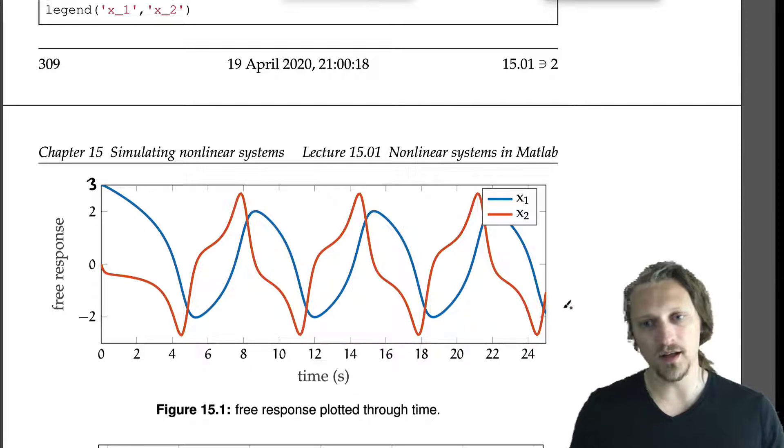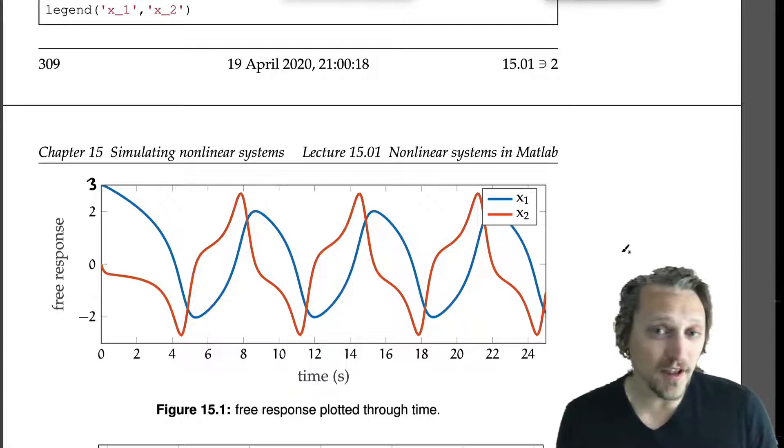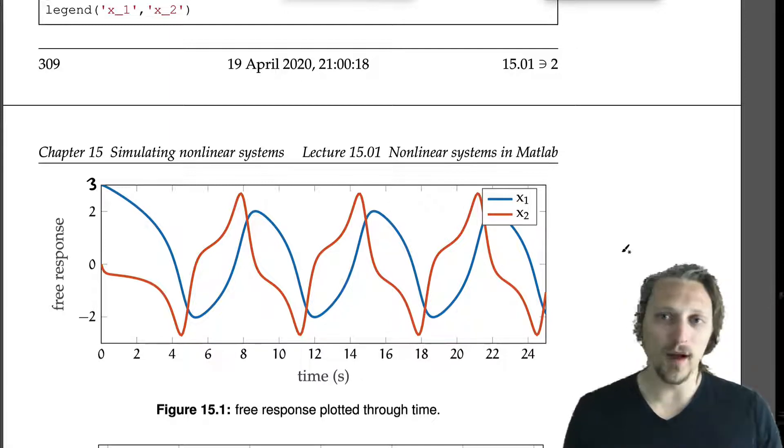We get this free response of each variable, so x₁ is in blue and x₂ is in red. We get this starting out at 3, which was the initial condition given for x₁, and then x₂ starts out at 0. We see, after a little bit of transient, them settle into a periodic function that is certainly not sinusoidal. It's periodic but not sinusoidal, and it's not a decaying exponential either.